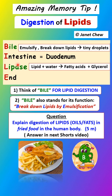Let's go through the word BILE one by one. B is for bile — bile is produced by the liver and stored in the gallbladder, then released from the gallbladder into the duodenum, the first part of the small intestine, where it carries out emulsification of lipids. This means it breaks down the lipids into tiny droplets to increase the total surface area for faster digestion by the enzyme lipase.